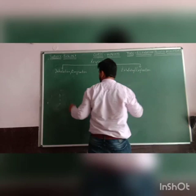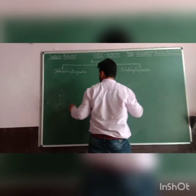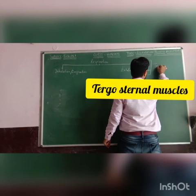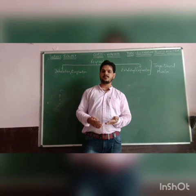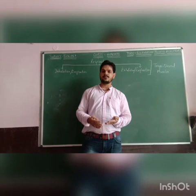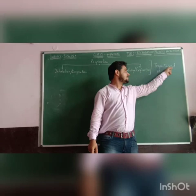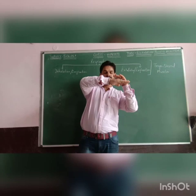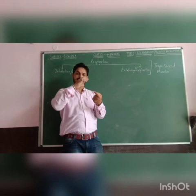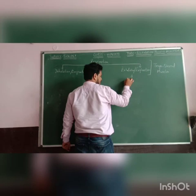The inspiration and expiration processes are controlled by a type of muscles called tergosternal muscles. These muscles are present on the tergum region and the sternal region of the cockroach's body. The tergum region and sternal region contain this special kind of muscle, which is very important in the respiration process.